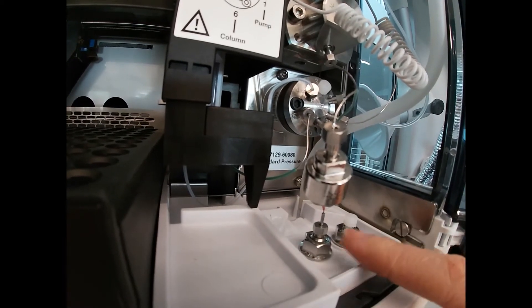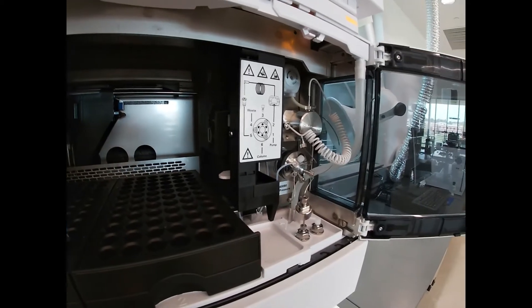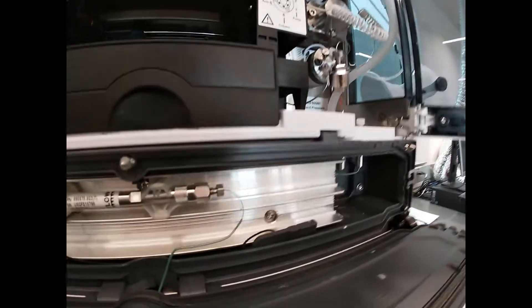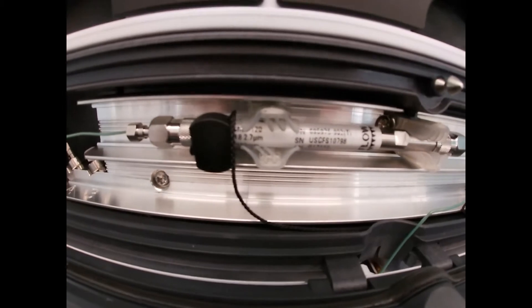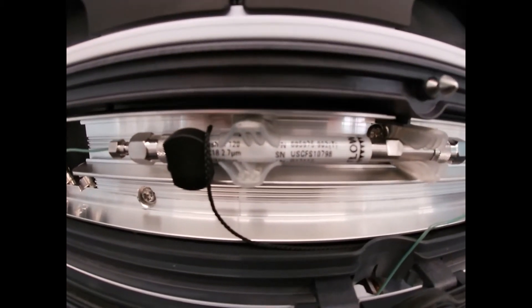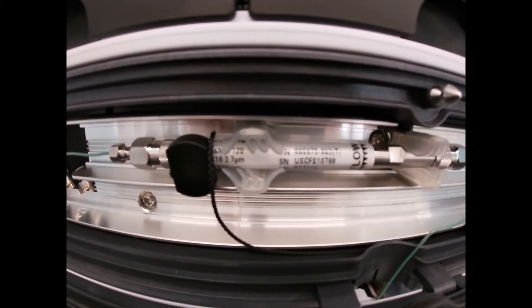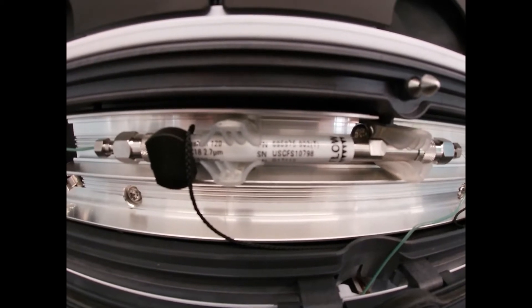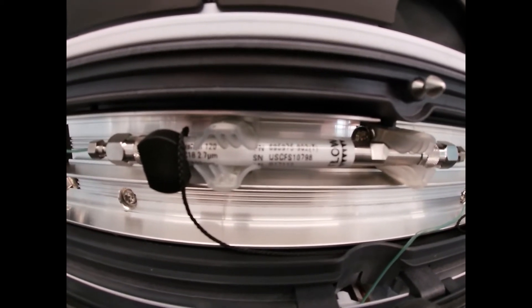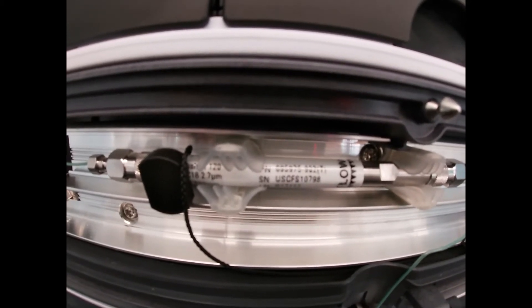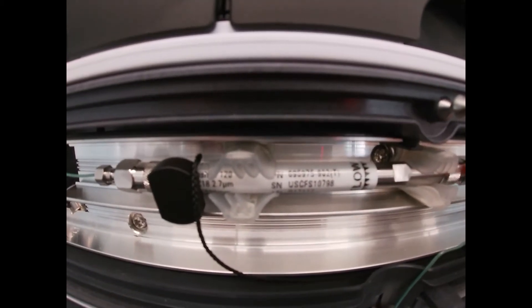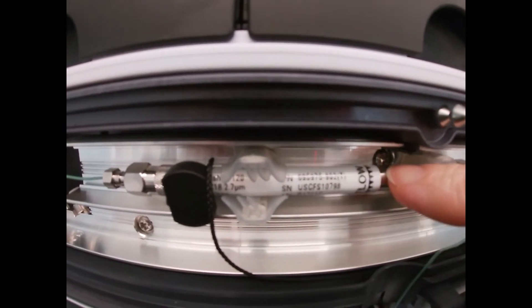We pass through this filter and then we enter our column. The column, you'll notice, is encased in stainless steel, and that's because we're using high pressure liquid chromatography. Those pressures reach about hundreds of bar so we can pass through our column.